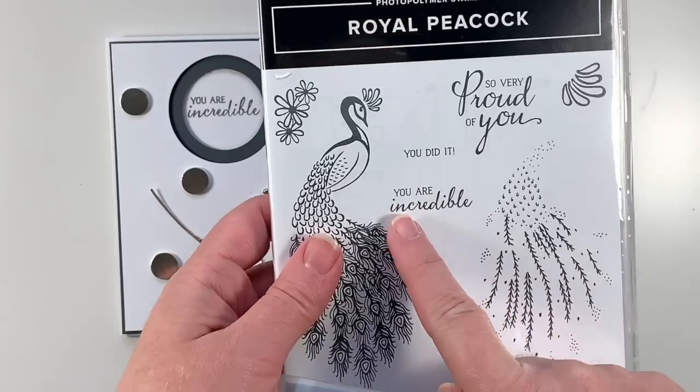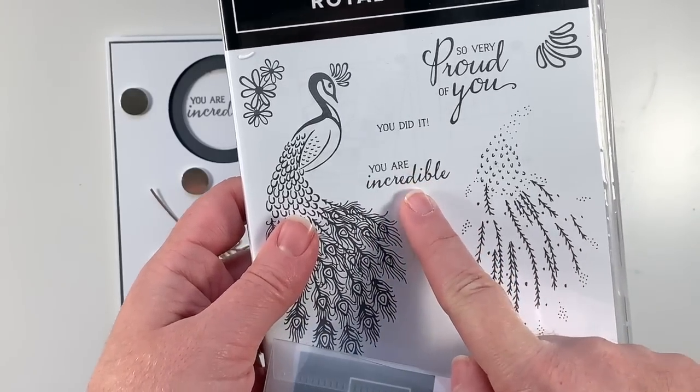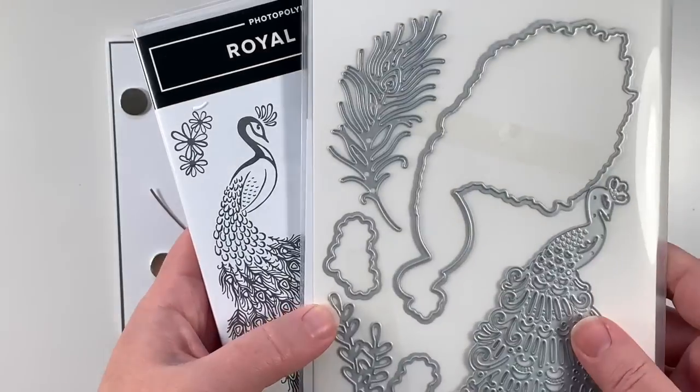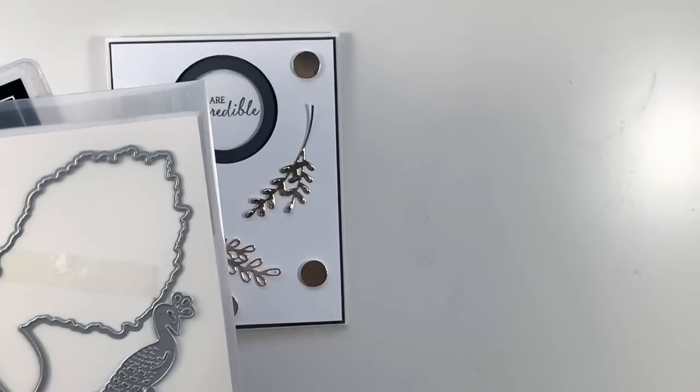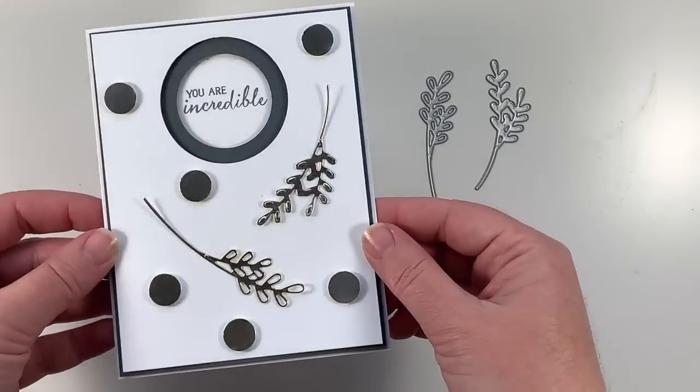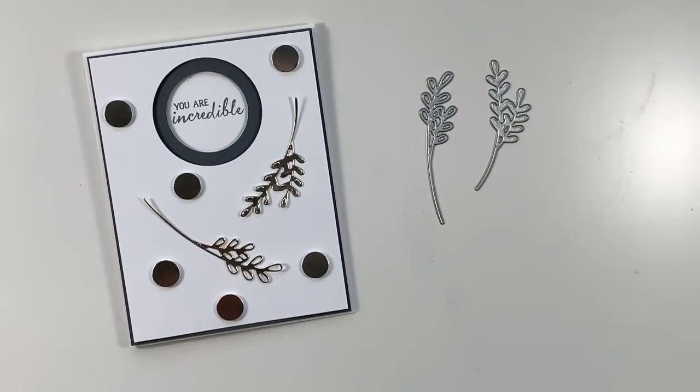We're using the stamp You Are Incredible here, I love that sentiment, as well as the Detailed Peacock dies. So like I said, I'm using these two dies from that set. I'm really excited to show you this card. It's so shiny with that beautiful champagne foil. Let's go ahead and get started.